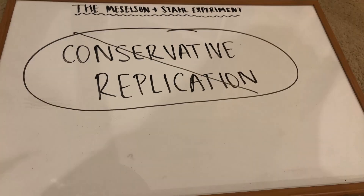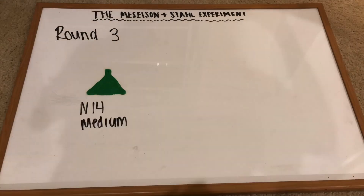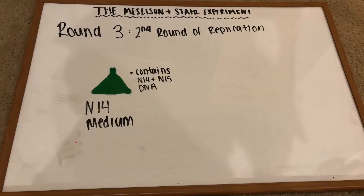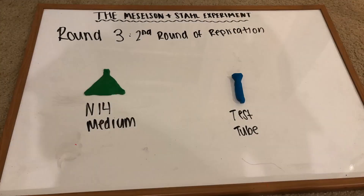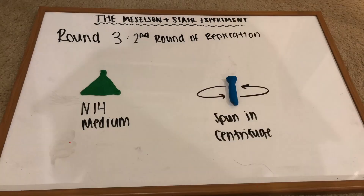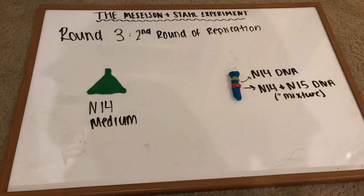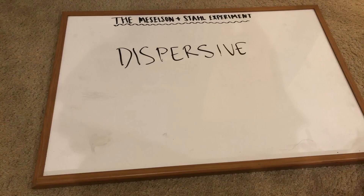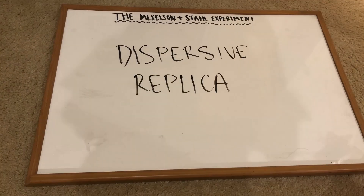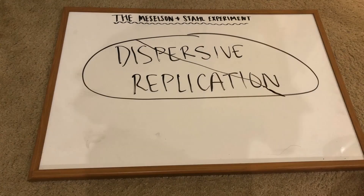Meselson and Stahl once again placed the solution in an N-14 medium, waited for the DNA to replicate, and placed the test tube in a centrifuge. They then observed that 50% of the DNA was in the middle, containing the N-14 and N-15 mixture, and 50% was at the top, containing just the light N-14 DNA. This result eliminated the dispersive hypothesis, which would have shown 100% of the DNA as a mixture of N-14 and N-15 components floating in the middle of the test tube.